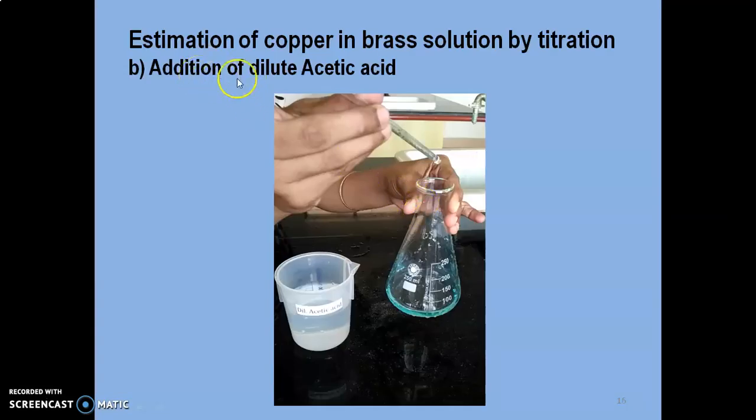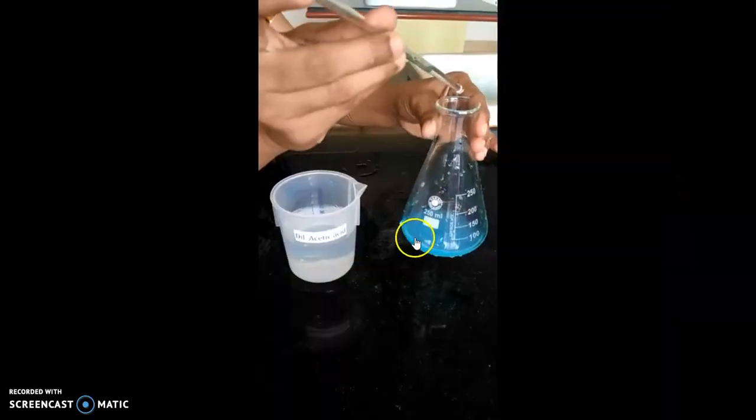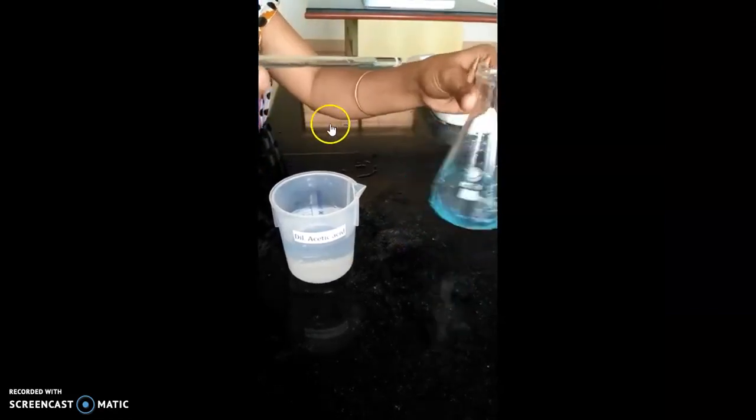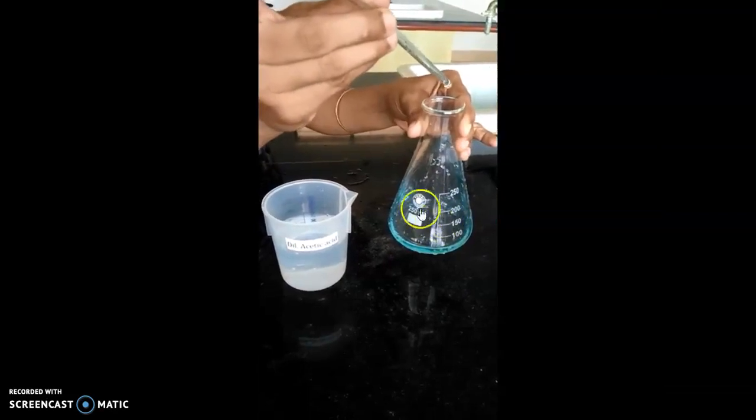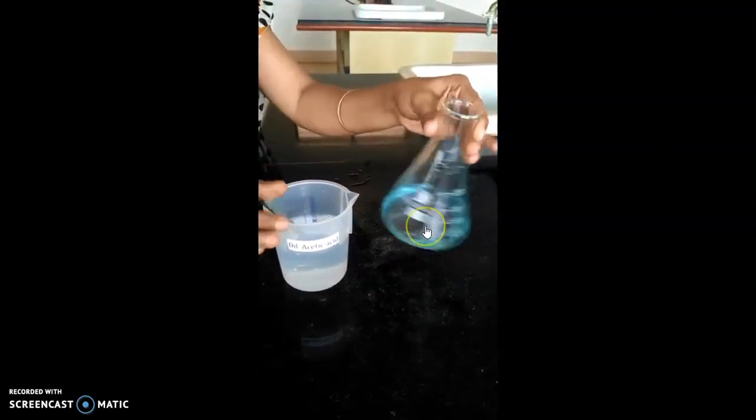Later, addition of dilute acetic acid is done until the precipitate dissolves to neutralize the excess ammonium hydroxide. Few drops of acetic acid are added carefully until the blue precipitate dissolves.